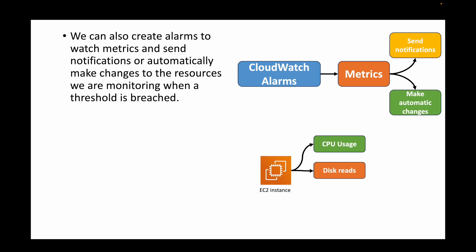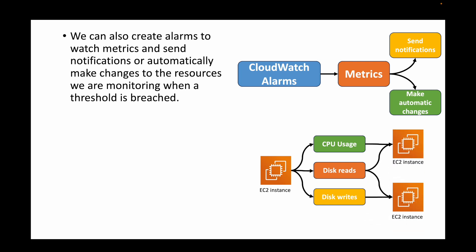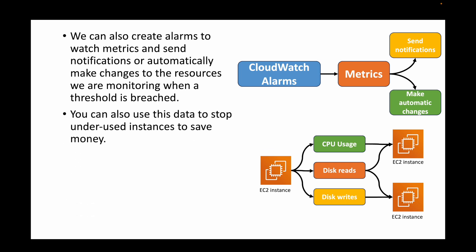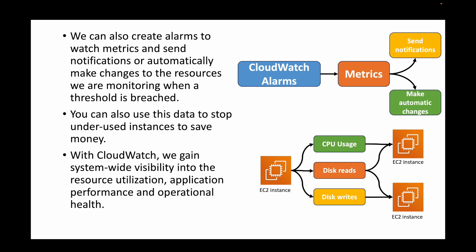For example, with an EC2 instance we want to monitor CPU usage, disk reads, and disk writes — these are our metrics. We define a threshold: let's say CPU usage is set at 90%, and whenever that threshold is breached we can define an action like launching new instances. If CPU usage is below the threshold, we can terminate instances. We can also use metrics to stop underused instances to save money. With CloudWatch we essentially get system-wide visibility into resource utilization, application performance, and the overall operational health of our resources.